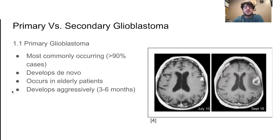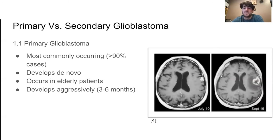Glioblastomas were originally characterized into two subtypes. The first is primary glioblastoma, the most commonly occurring, accounting for over 90% of cases. It develops de novo or spontaneously without any malignant precursors from seemingly normal brain tissue. It occurs mostly in elderly patients around 50 to 60 years old and is very aggressive, developing in just three to six months.